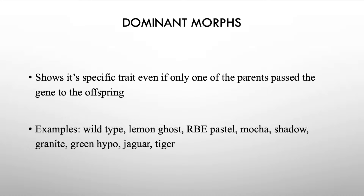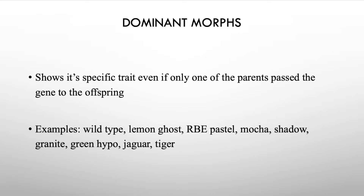With a dominant gene, you only need one copy from one of the parents to visually express that morph. Some animals actually have two copies of a dominant gene, and if it has two copies, it gives a greater chance that the trait will be passed on to the offspring.